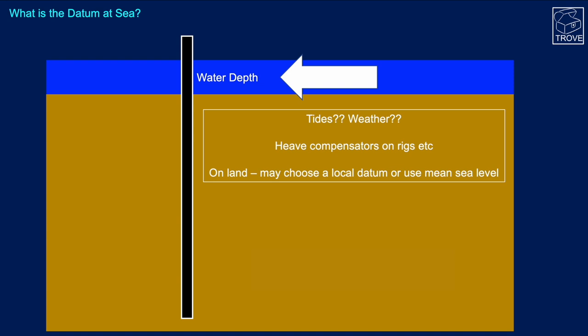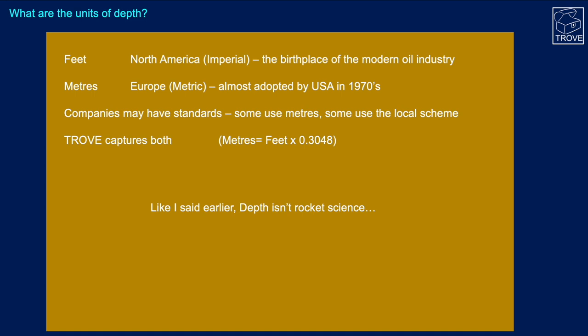On land, the datum may be just a local datum, or may use mean sea level. In North America and areas where North American companies have worked, imperial systems are used — Texas was the birthplace of the modern oil industry. In other parts of the world, metric is adopted. Metric was almost adopted in the USA in the 1970s, but it didn't happen, and it seems unlikely to happen anytime soon. Companies may have standards and use metres, but also follow the local scheme. If every well in a basin is reported in feet, switching to metres puts everything out of sync. In Trove, we capture both — it isn't rocket science to convert between the two, but it's worth having.